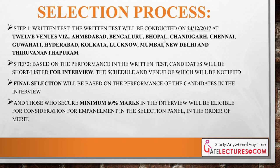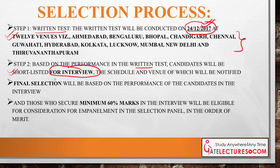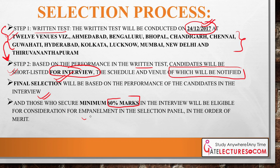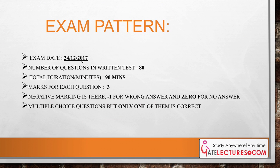The selection process for ISRO consists of three steps. Step one is a written test, to be conducted on 24th December at specified venues across various cities. Step two is an interview — candidates are shortlisted based on their written test performance and the schedule will be notified. The final selection will be based on the interview performance, and candidates must secure a minimum of 60% marks in the interview to be eligible for employment consideration.